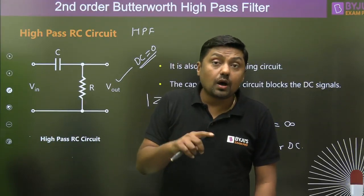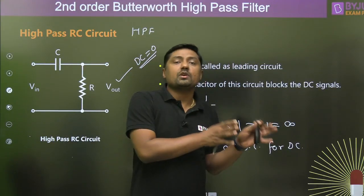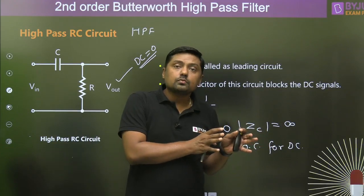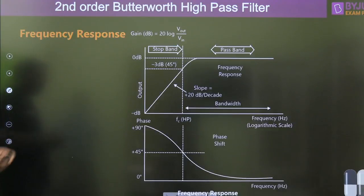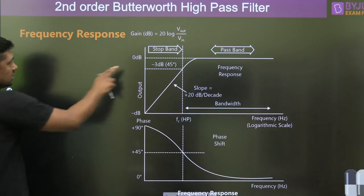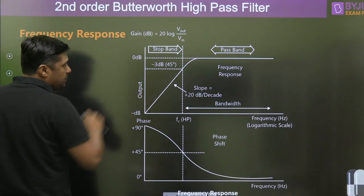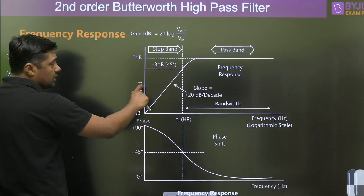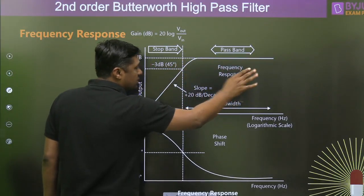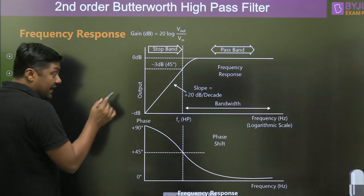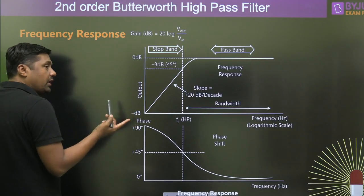A high pass filter will pass high frequency components but stop low frequency components. Looking at the diagram, this is the stop band, this is the pass band, and the slope of this line is 20 dB per decade — a positive slope. In the pass band it passes high frequency components and suppresses low frequency components. Exactly at zero frequency the gain will be zero.